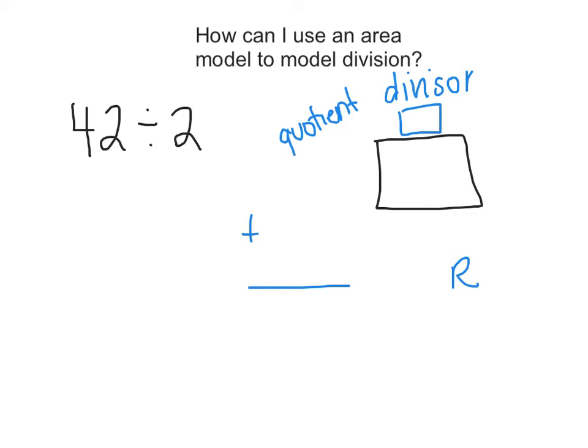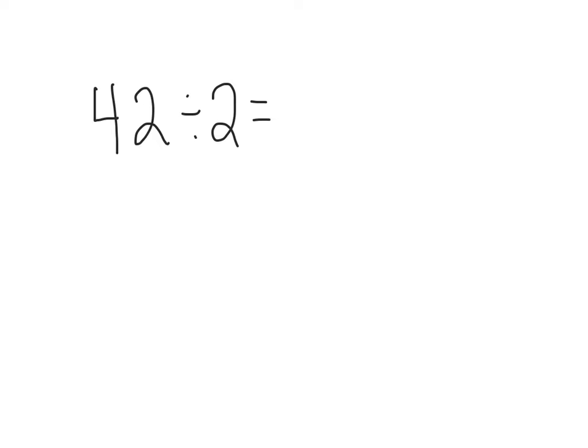So let's look at that problem in particular. Let's think about what we know about 42 and 2. If I'm looking at my compatible numbers, I know that 2 and 4 are compatible. I know that there are two groups of 2 and 4. But wait, I know that that 4 isn't just a 4. It's 4 tens, 40. So I know that it doesn't just go into that 4 two times. It actually goes in there 20 times.